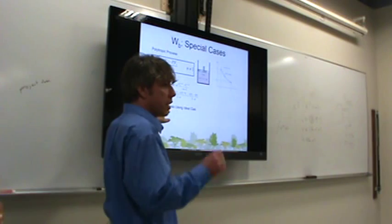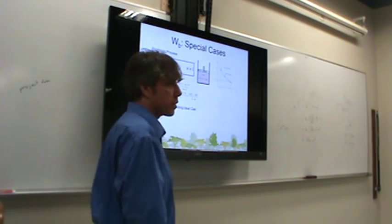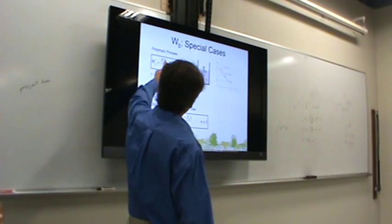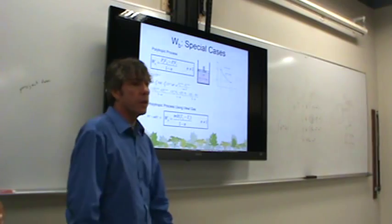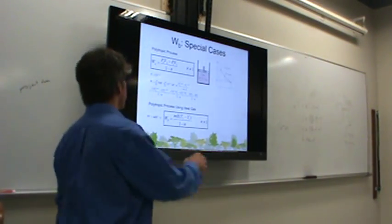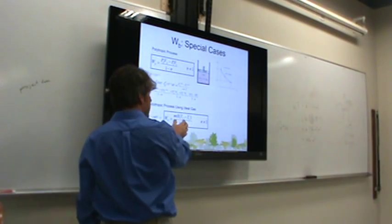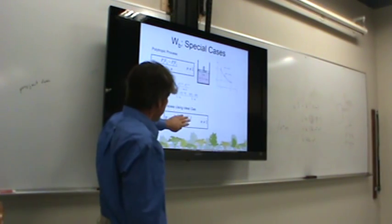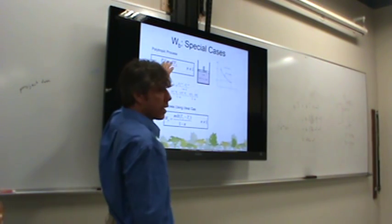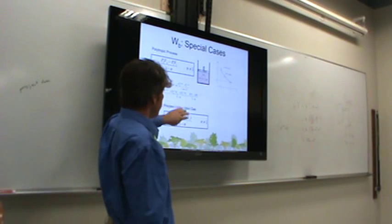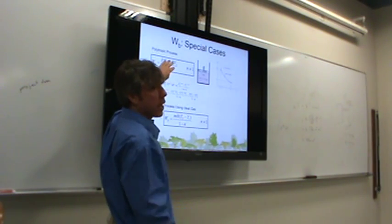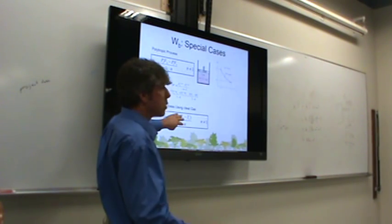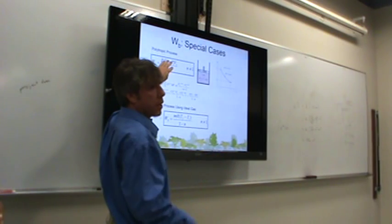If we have an ideal gas that is also behaving polytropically, then PV equals MRT is also true. In that case, instead of having PV, we could just have MR times (T2 minus T1). This equation is only good for an ideal gas that is behaving polytropically. The general polytropic equation can be used for a real gas or an ideal gas behaving polytropically; the ideal gas temperature form adds the restriction of ideal gas behavior.